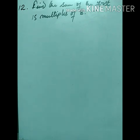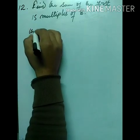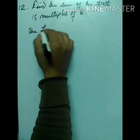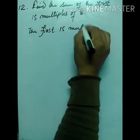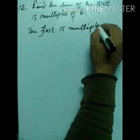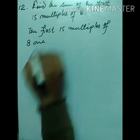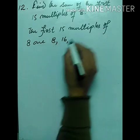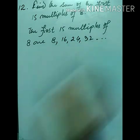Next question: Find the sum of the first 15 multiples of 8. The first 15 multiples of 8 are: 8, 16, 24, 32, and so on.